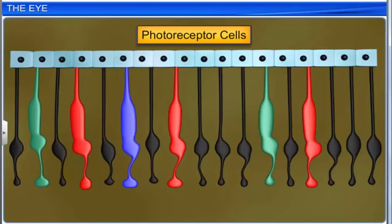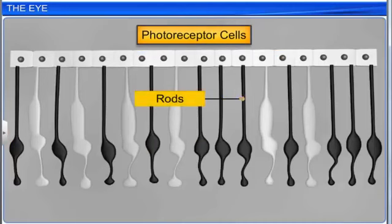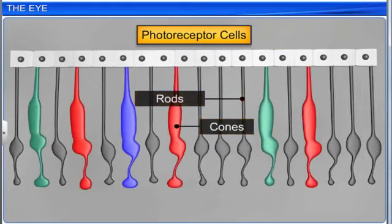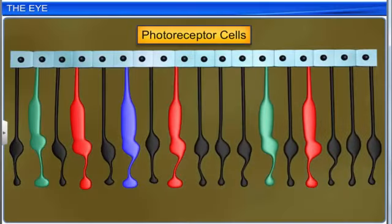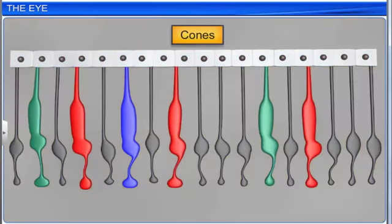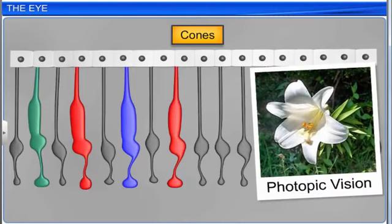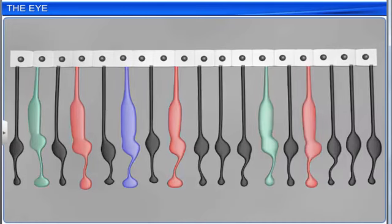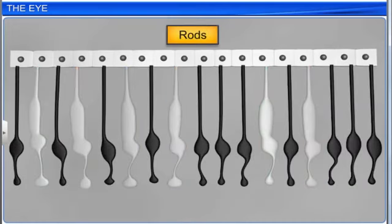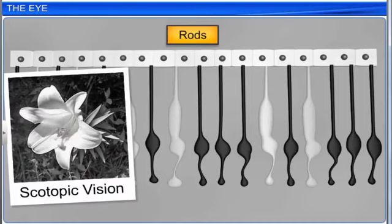Photoreceptor cells are of two types: rods and cones. These cells contain photopigments. The cones are responsible for color vision and daylight vision, which is also known as photopic vision. The rods are responsible for twilight vision, which is also known as scotopic vision.